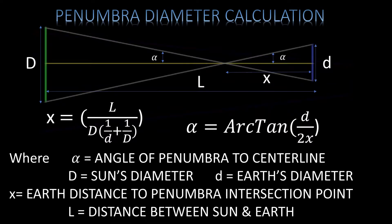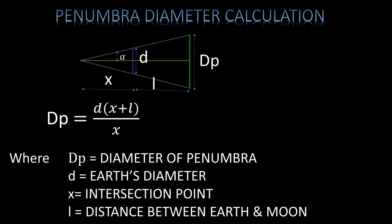For the penumbra, the penumbra lines cross in front of the earth. Therefore, we have to first determine where the intersection of the penumbra lines occur. With the help of geometrical principles, the formula for x — the distance of the intersection to earth — can be found as shown, where capital D is the sun's diameter, small d is the earth's diameter, and capital L is the distance between the sun and earth. Once x is available, the penumbra diameter is a simple application of the geometry of the situation, where L is the distance between the earth and the moon.